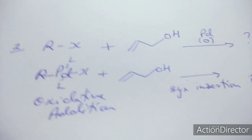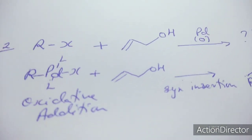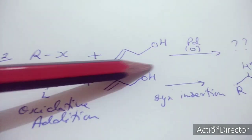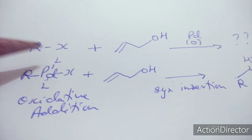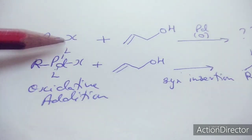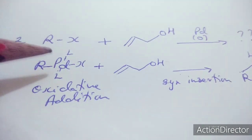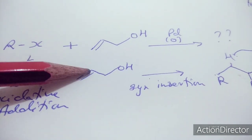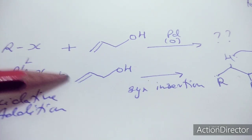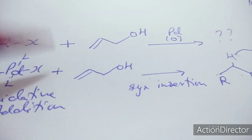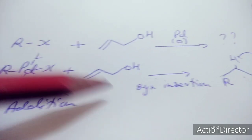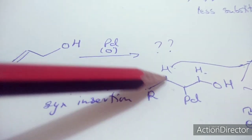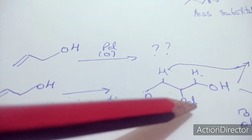Moving to a second interesting problem: again we have a palladium-catalyzed Heck reaction. The first step is oxidative addition, converting Pd(0) to Pd(II). The next step is syn insertion across the double bond: R is placed at one end and Pd at the other end via syn insertion.